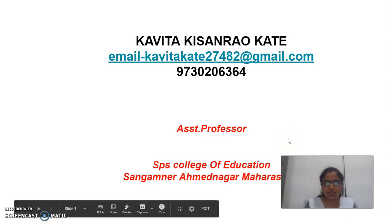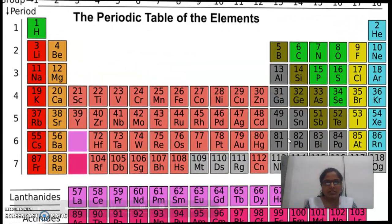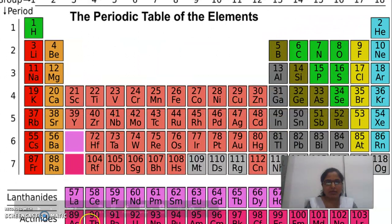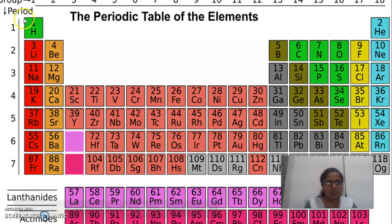Firstly, we will see the periodic table and how it looks like. This is the periodic table. In this periodic table, there are 1, 2, 8, 7, and 8 — these are the periods — and 1, 2, up to 18 — these are the groups.